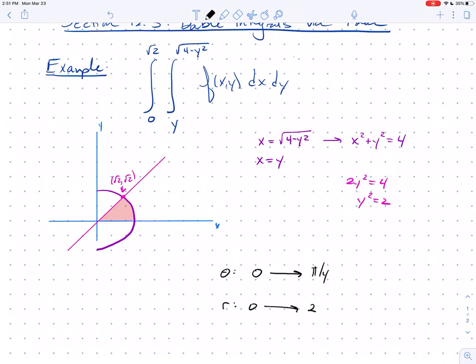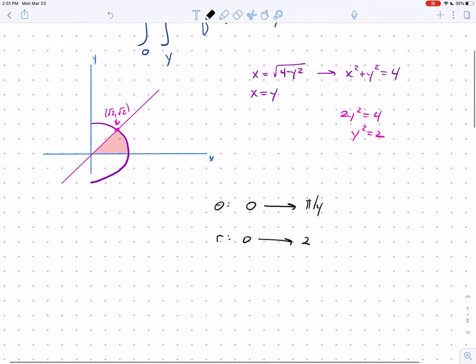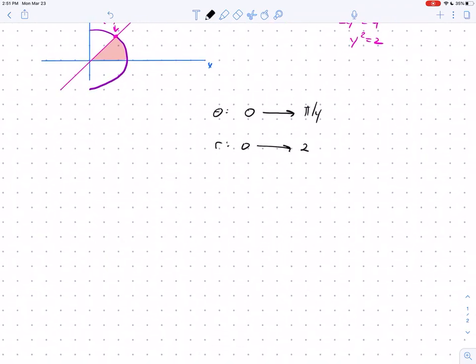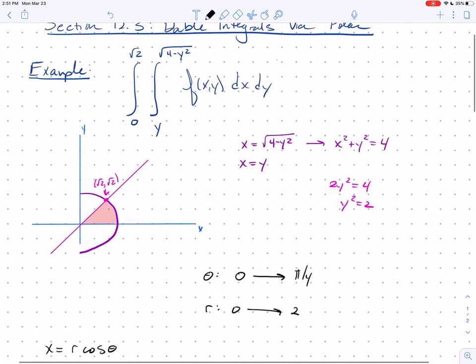Let's take a look and see what happens. It turns out that in general, when you want to switch to polar, you can recall that x is r cosine theta. We said x equals r cosine theta, y equals r sine theta.